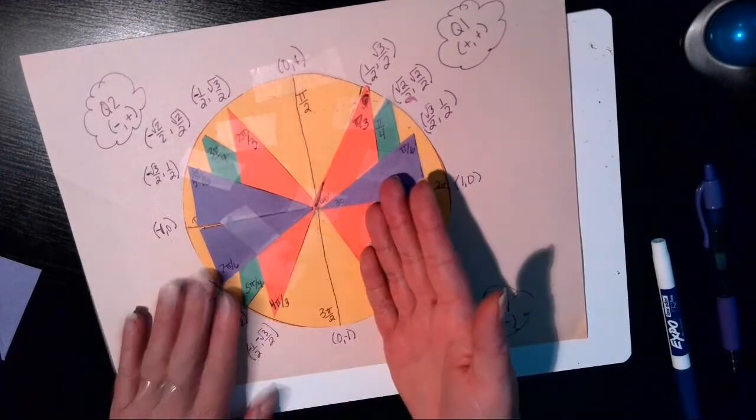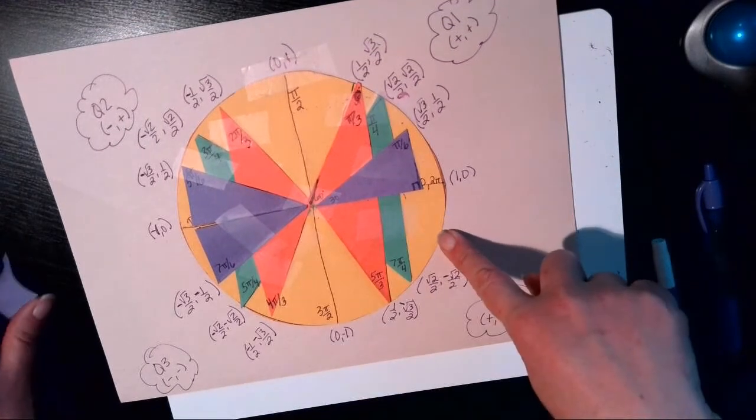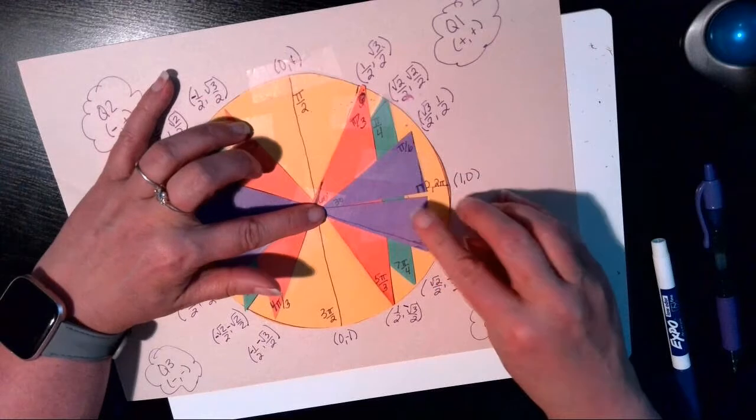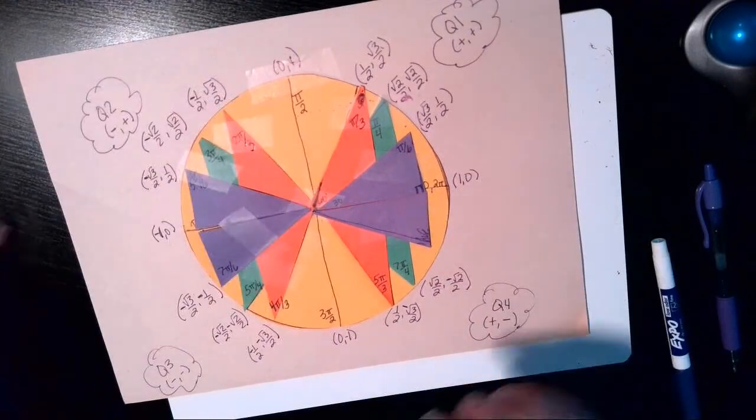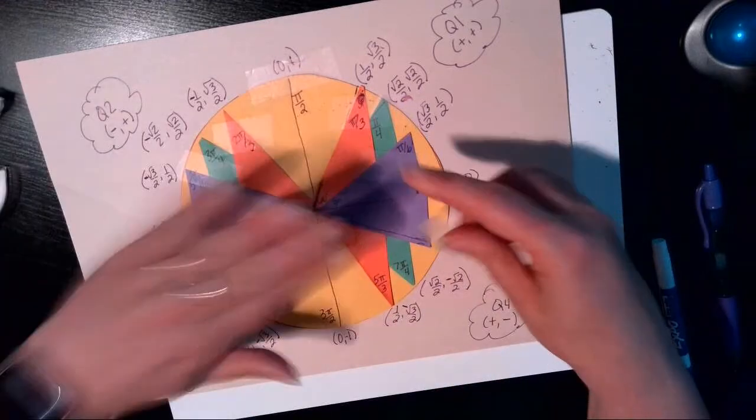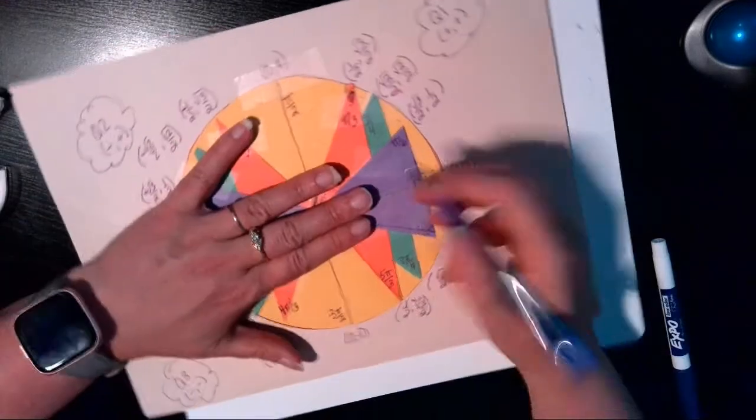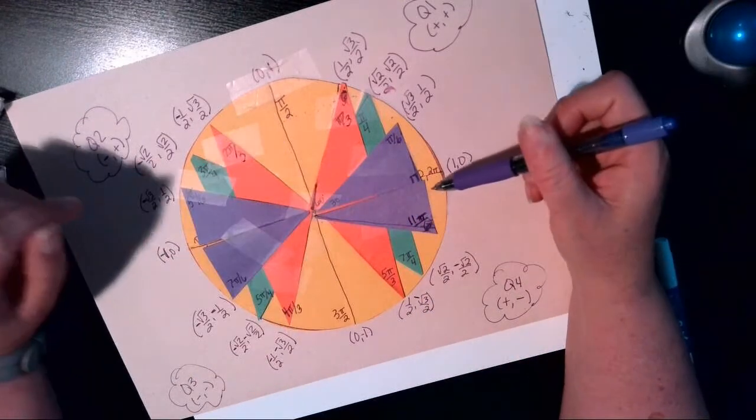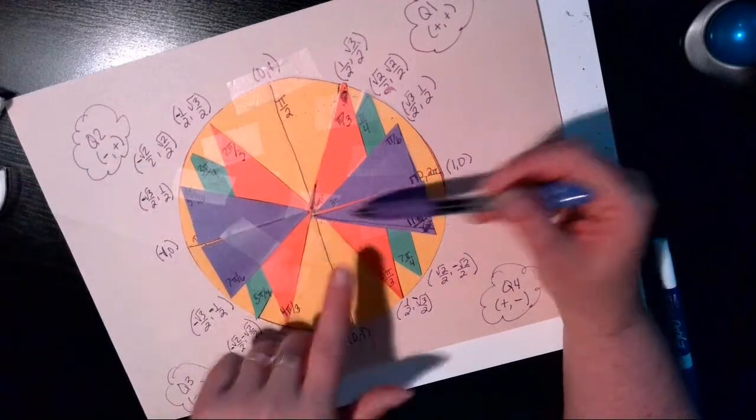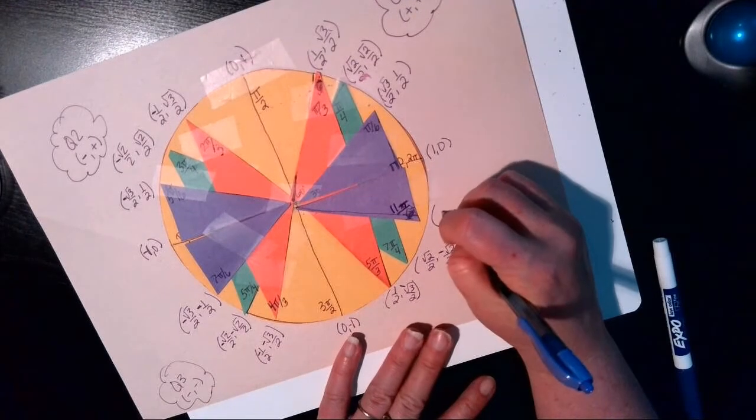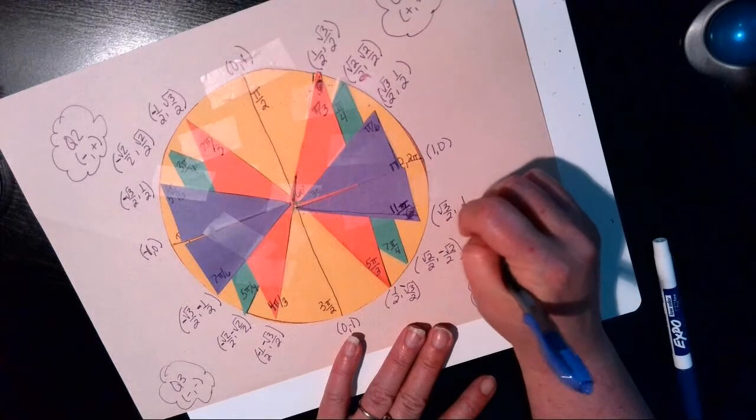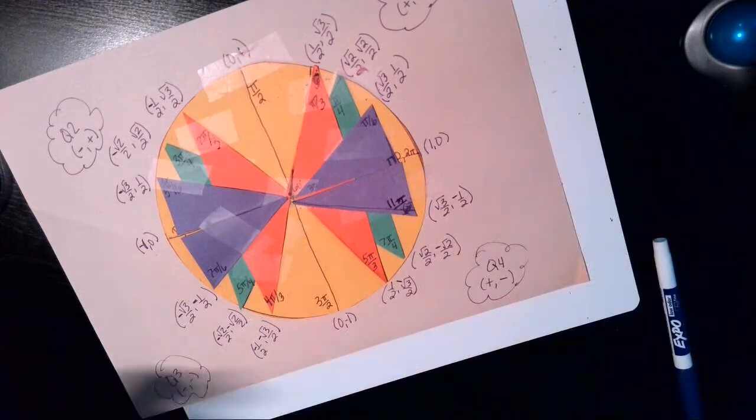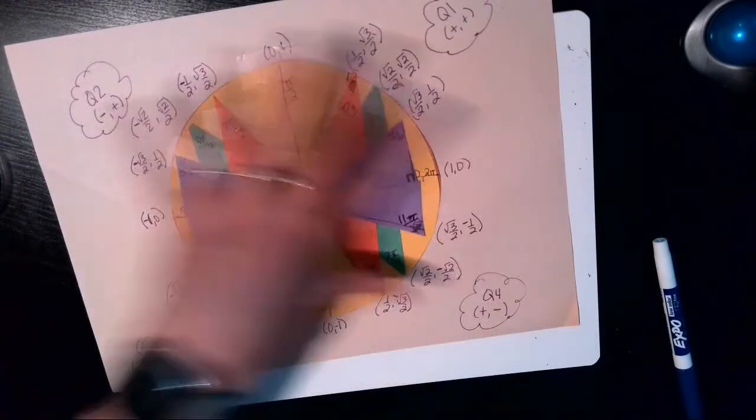And last but not least, now to finish off our circle, we still need 11 pi over 6. So we're going to take that first quadrant pi over 6 angle, reflect it into the fourth quadrant, and tape that into place. And that is the last one, 11 pi over 6. And then this would be 12 pi over 6, which is 2 pi. So at 11 pi over 6, our last coordinate to fill in, that's going to be root 3 over 2 comma 1 half. And in quadrant 4, the x is positive, the y is negative. So we put a negative on that one half.